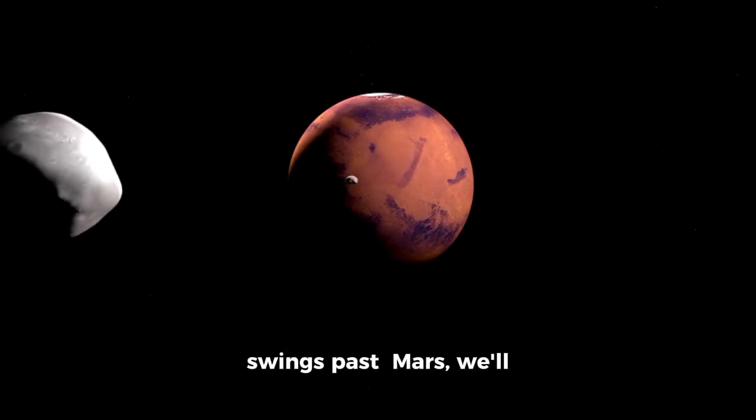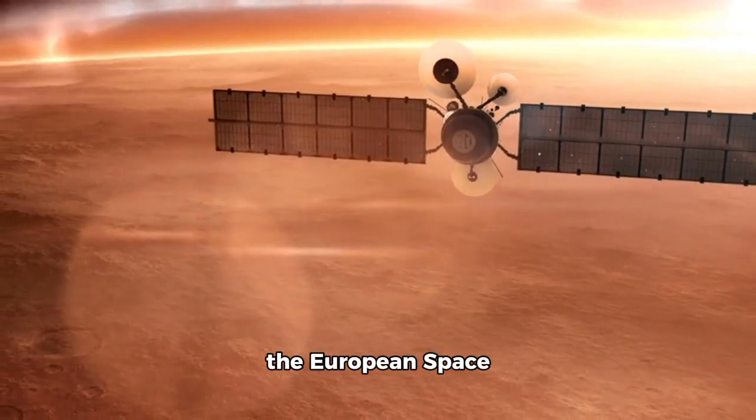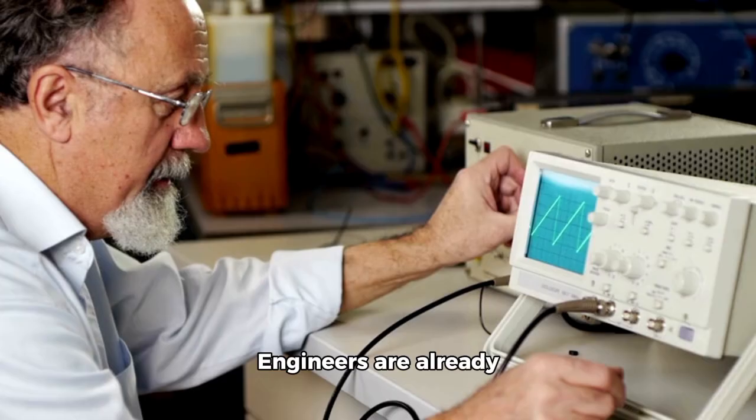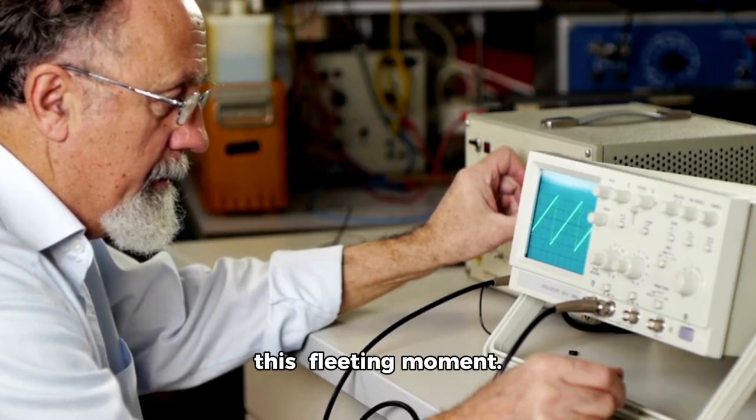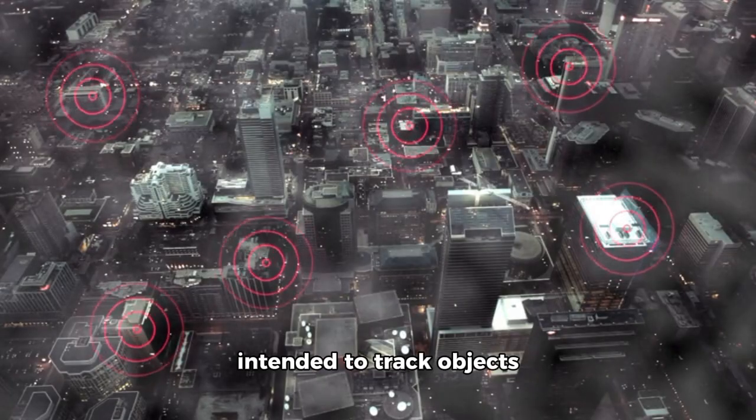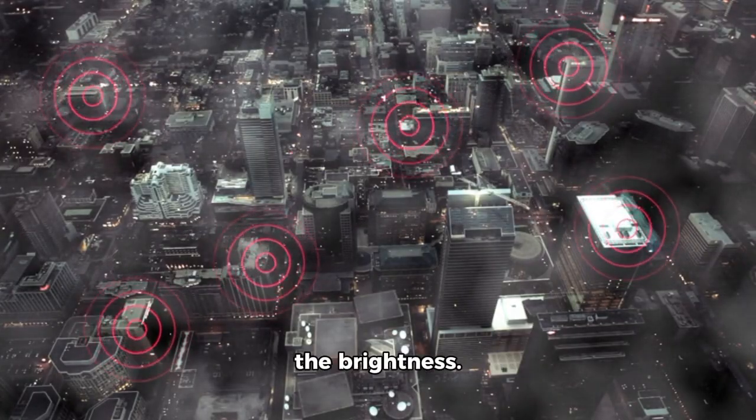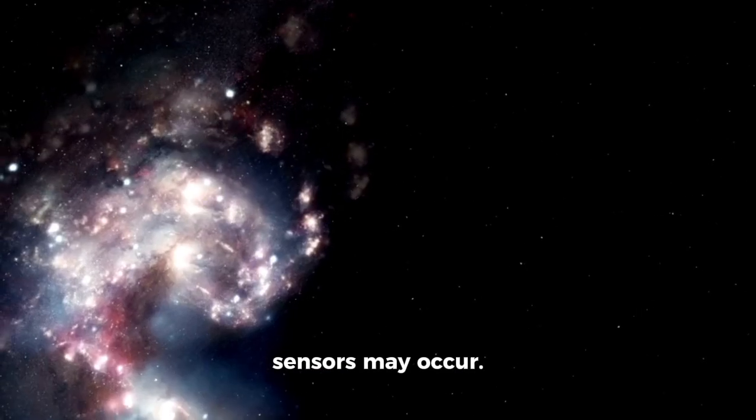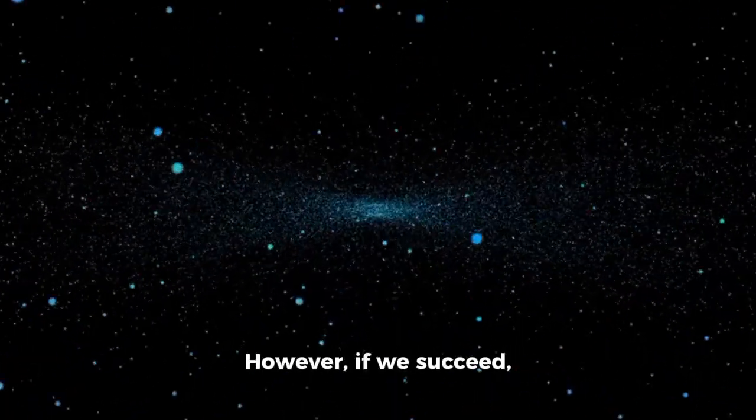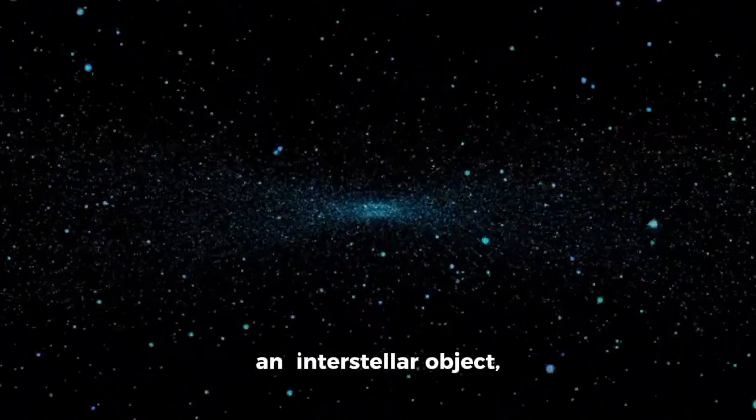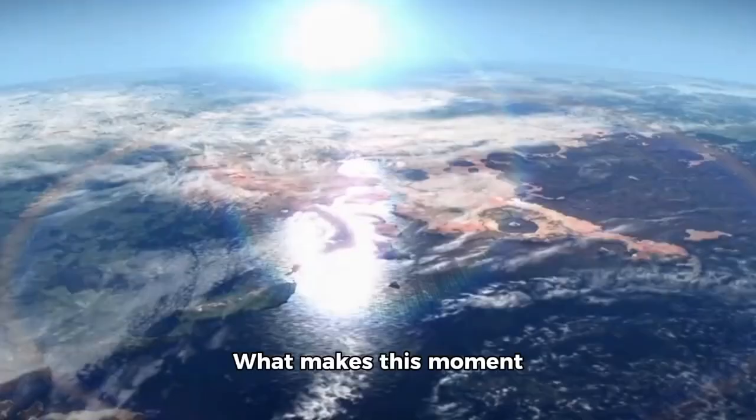But four days later, as it swings past Mars, we'll get our chance. The Mars Reconnaissance Orbiter, along with other vehicles like the European Space Agency's Mars Express, will be our eyes in the sky. Engineers are already working, calculating trajectories over time and calibrating instruments to capture this fleeting moment. The challenge is immense. HiRISE was never intended to track fast-moving objects at this distance, and 3i Atlas is unpredictable. If it flares too brightly, the camera's sensors may saturate. If it dims unexpectedly, we might see nothing but a faint smudge. However, if we succeed, we could get the sharpest image ever of an interstellar object, a snapshot of something that's been drifting between stars for millions, maybe billions of years.